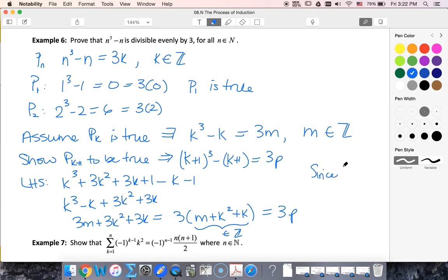Since P sub k+1 is true and P sub 1 is true, then by mathematical induction, P sub n is true for n element of natural numbers.